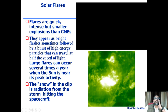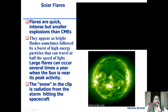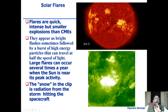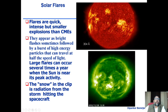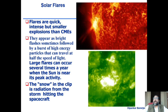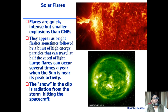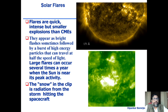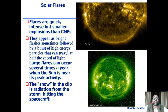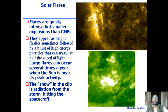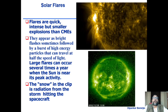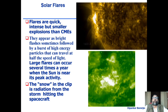Solar flares are quick, intense, but smaller expressions than coronal mass ejections. They appear as bright flashes, sometimes followed by a blast of high energy particles that can travel at half the speed of light. Large flares can occur several times a year when the sun is near its peak activity. The magnetic activity also changes on the long term — this subject is called the solar cycle. One of my PhD students, Vibhuti, will shed more light in a full lecture in coming weeks.